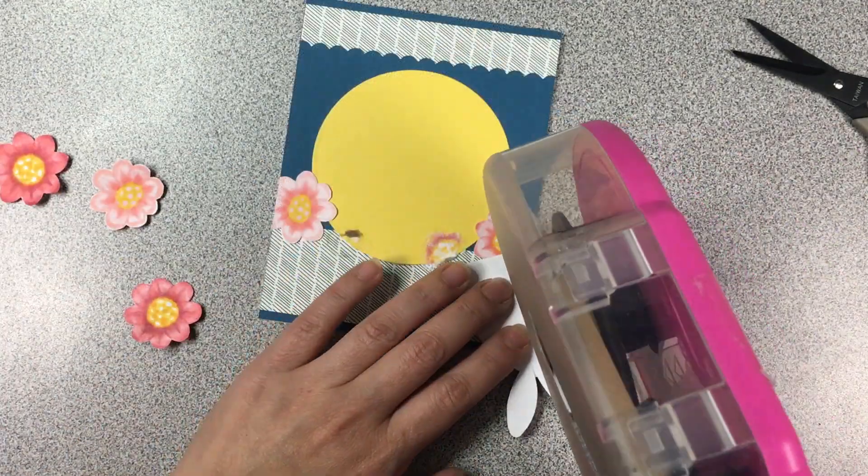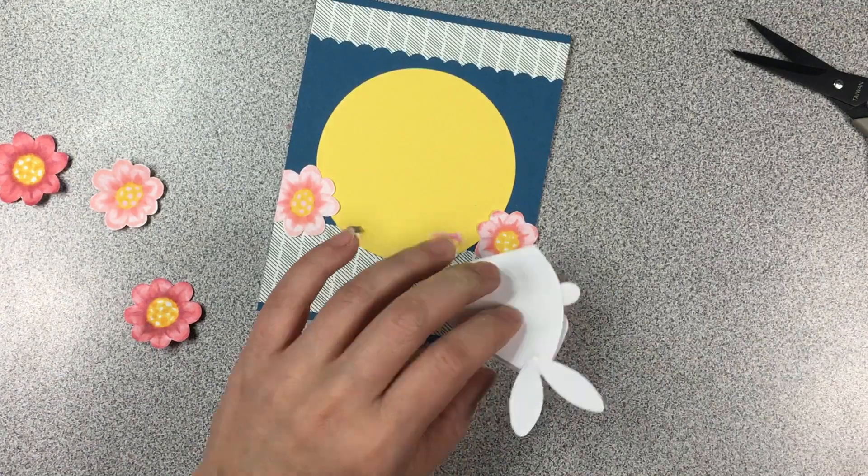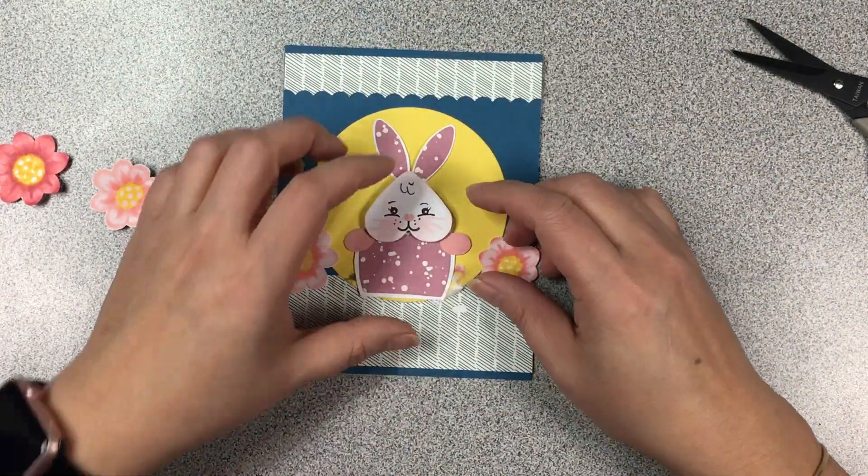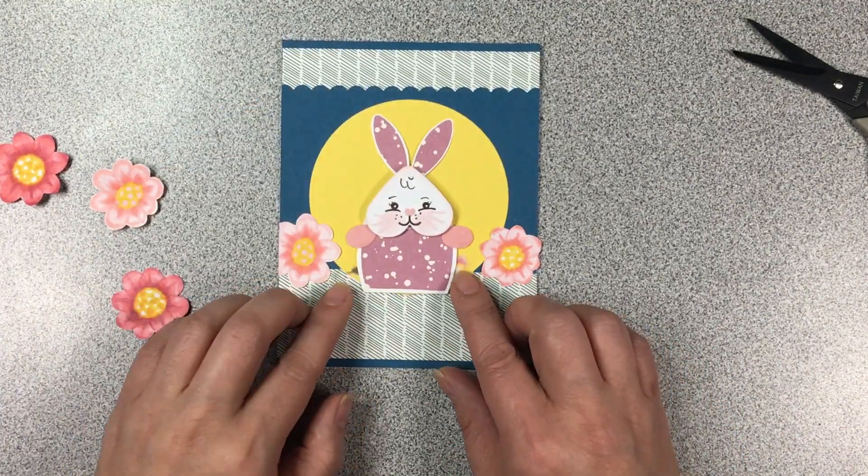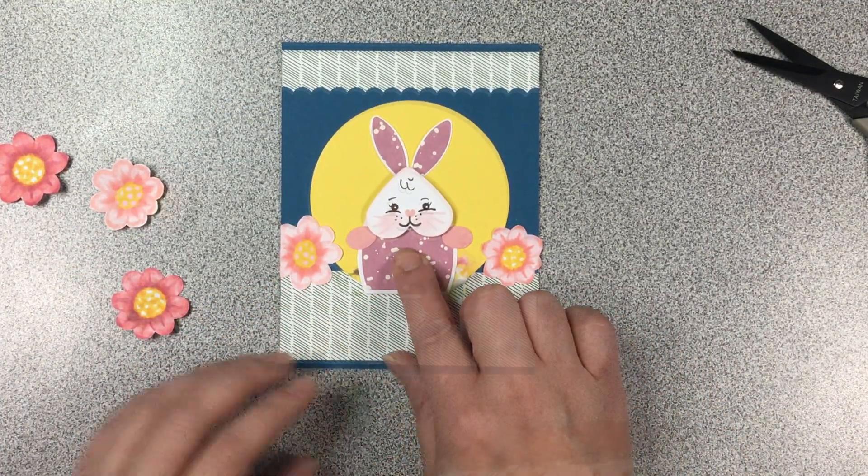And I did make a mistake here and you're gonna see what I do with that. See the bunny had nowhere to go. It was sitting a little too high and I was supposed to put the bunny down first and then the flowers so I got carried away there. So I had to rip the flowers off very carefully and then I was able to place the bunny first.